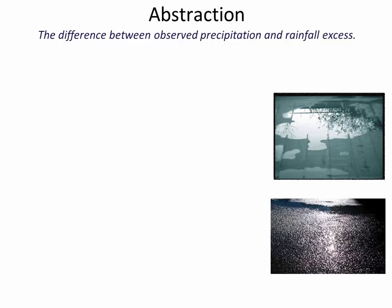Abstractions are things that get in the way of rainfall excess — they're the difference between observed precipitation and rainfall excess. One type of abstraction is surface wetting. Here are pictures showing rough asphalt pavement versus polished granite tiles. Each requires a different amount of water to wet the surface before there's any runoff. Asphalt, being bumpy with pores and higher specific surface area, requires more precipitation before there's any excess — greater abstraction than the polished granite.